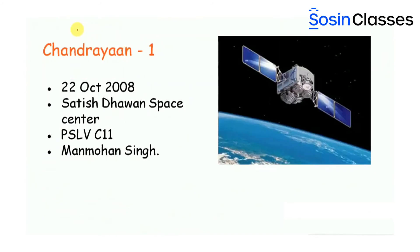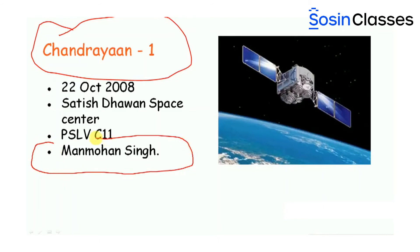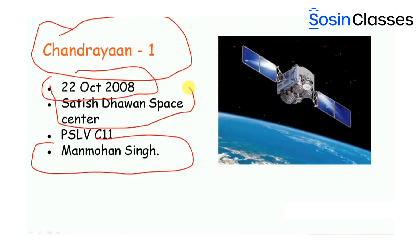Chandrayaan-1 was India's first lunar mission. During the tenure of Prime Minister Manmohan Singh, the project got a boost and Chandrayaan-1 was launched on 22nd October 2008 from the Satish Dhawan Space Center using ISRO's four-stage PSLV C-11 launch vehicle.